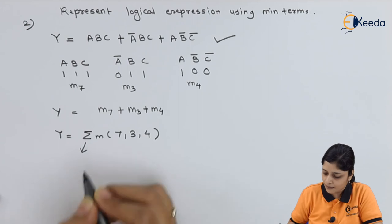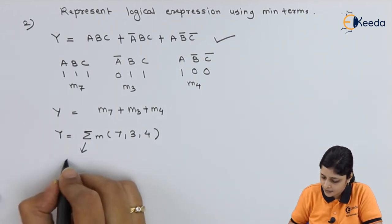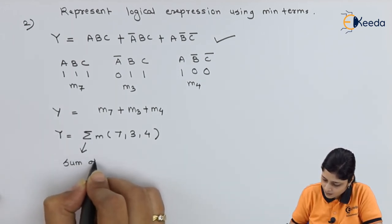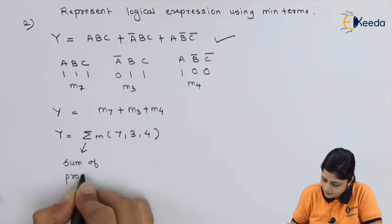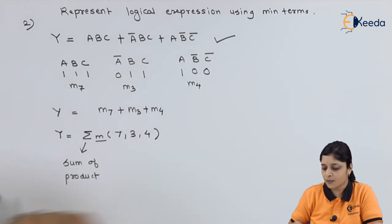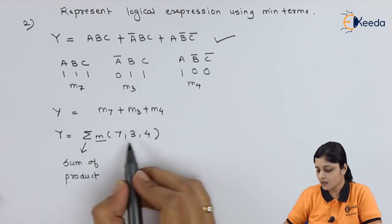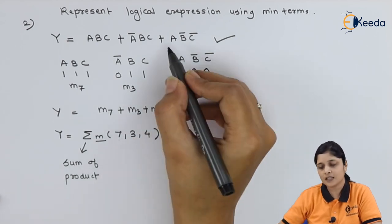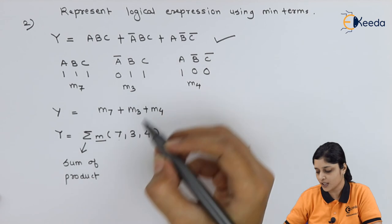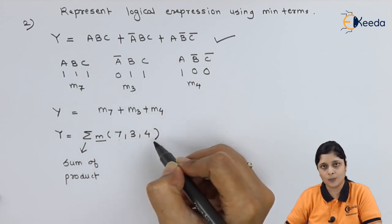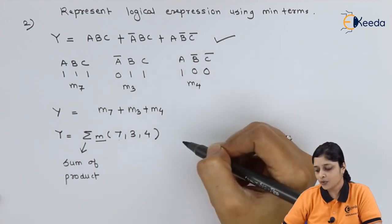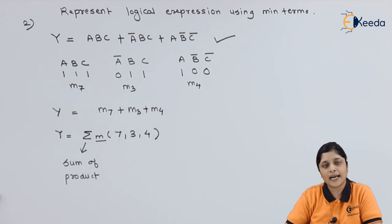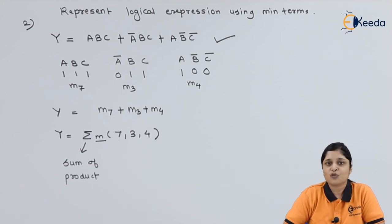Again, summation m represents sum of products, and small m represents minterms. The bases 7, 3, and 4 are the terms present in the given logical expression. In this way you apply the procedure: identify the minterms and put them in the final logical expression. Thank you for watching this video — stay tuned with Ikeda and subscribe.